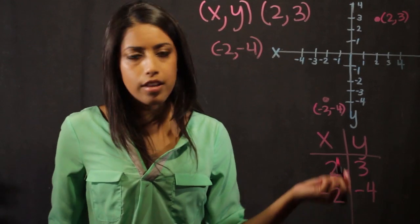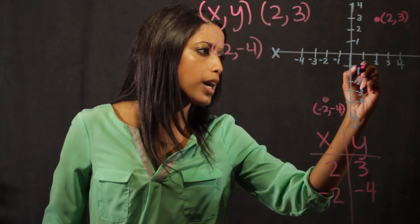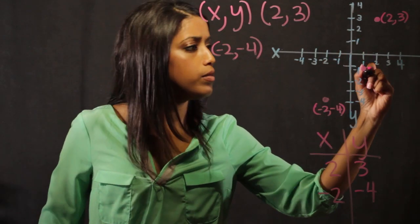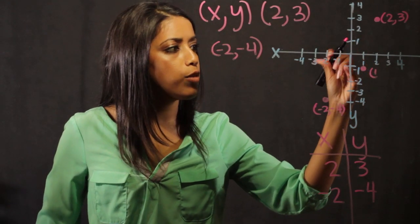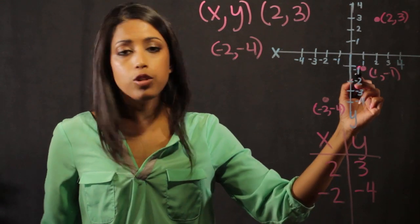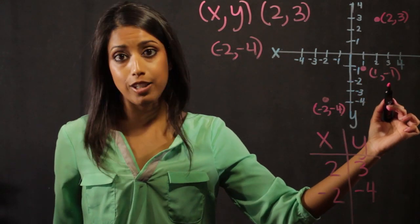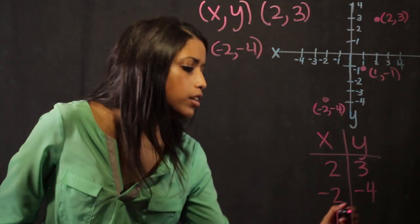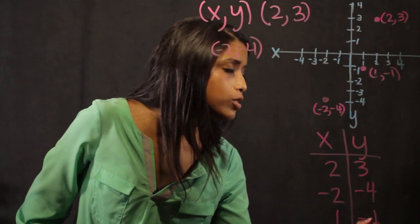If we wanted to add another point, we could put it right here, which would be on the x-axis counting over one. And on the y, we went down one. So this ordered pair is one comma minus one. And if we added that to our x-y chart, we'd have the x value at one and the y value at minus one.